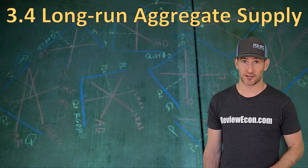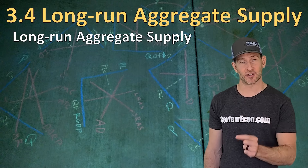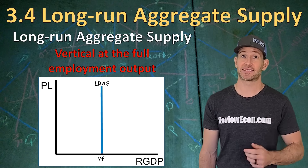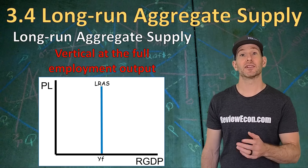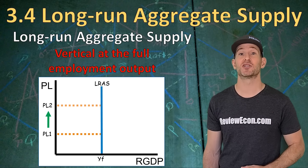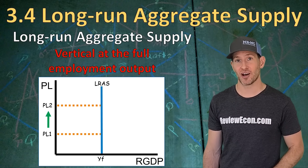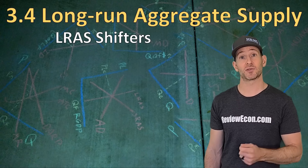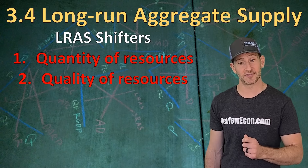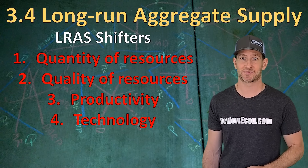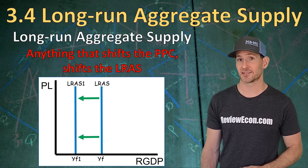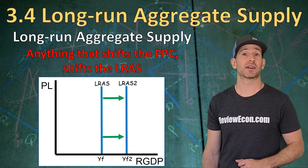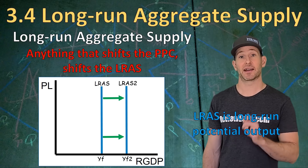For the AS-AD model, we have a third curve: the long-run aggregate supply curve. It is vertical at the full employment quantity of output, represented as YF — full employment national income. In the long run, the economy will have the full employment level of output at both low and high price levels, because wages are flexible and adjust to new price levels. The long-run aggregate supply curve represents a country's long-run potential output, which can increase or decrease as a result of changes in the quantity, quality, or productivity of resources, or technology. Anything that shifts the production possibilities curve inward shifts the LRAS to the left, and anything that shifts it outward shifts the LRAS to the right.